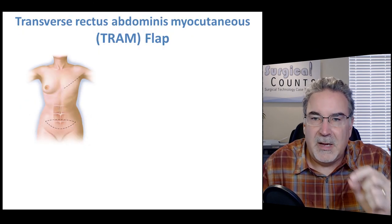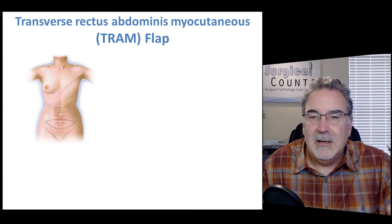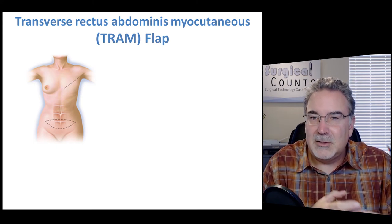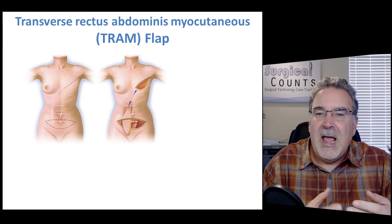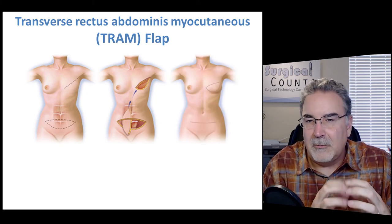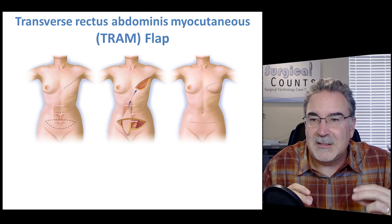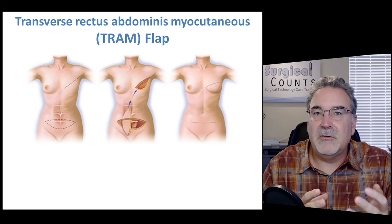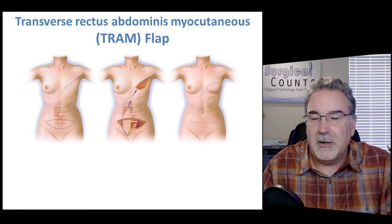Here's how the TRAM flap procedure works. We make an incision in the chest area where the flap is going, then make another crescent incision in the stomach area — that's where we get the tissue from, including the skin and possibly some rectus abdominis muscle. We leave it connected to its blood and nerve supply, bring it under the skin of the abdomen and thorax, and bring it out through the new chest opening to fill and enhance that area. We then suture together the crescent incision in the stomach, and the patient ends up with a little tummy tuck as well.